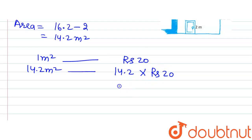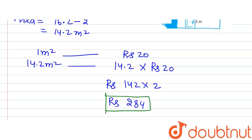Now solving it, we will get 142 multiplied by 2, and this will be equal to Rs 284. So this will be the cost of whitewashing the wall, excluding the door that has been fitted in the wall.